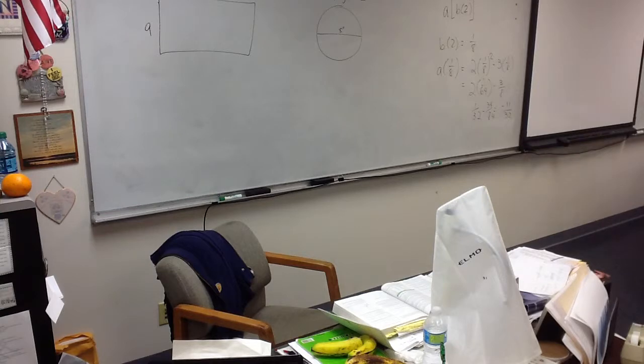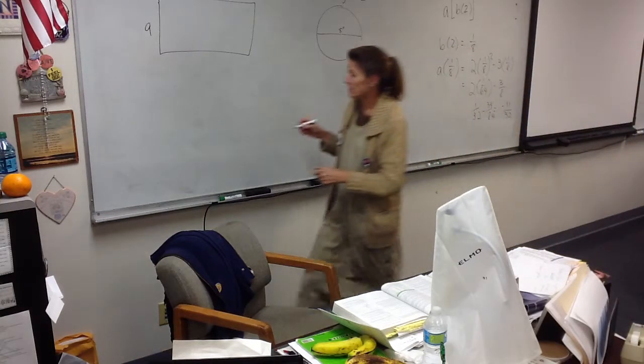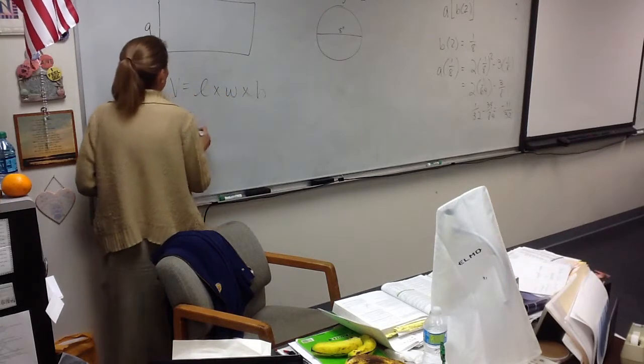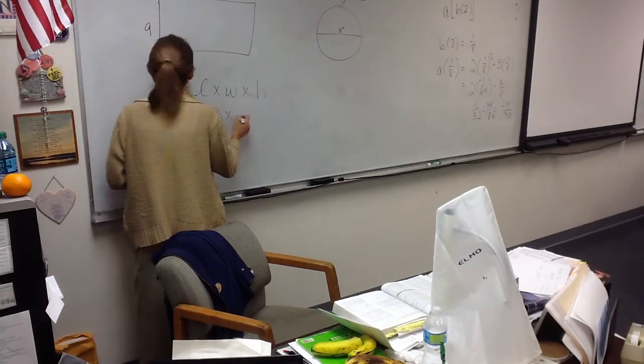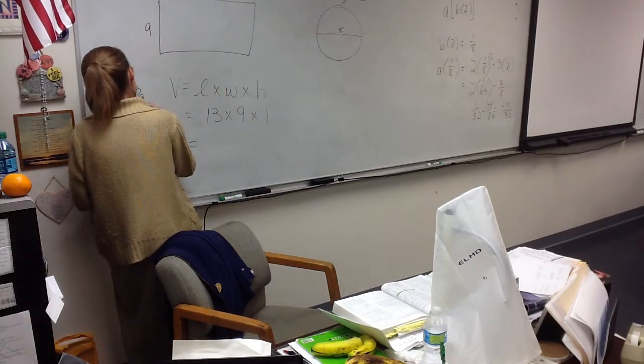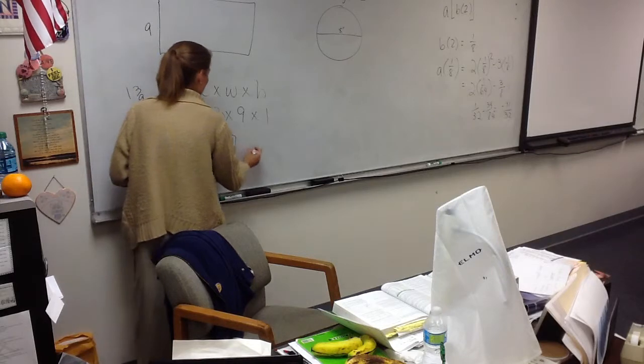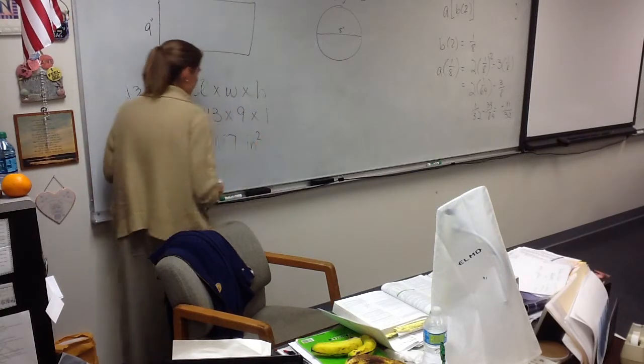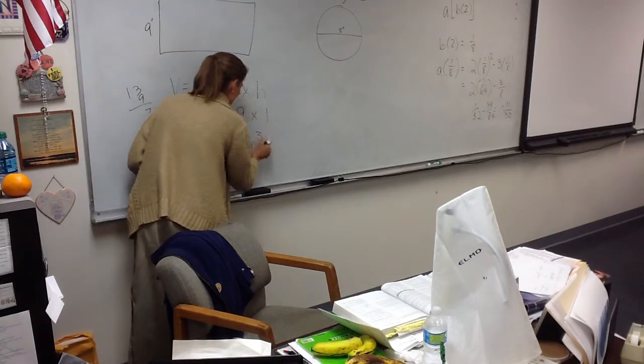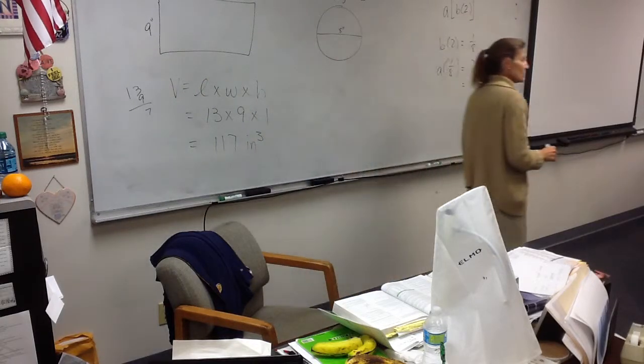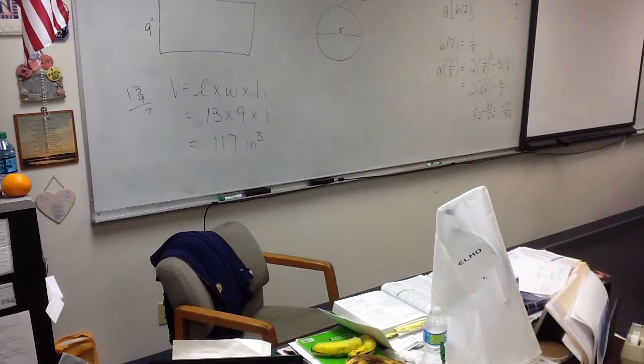Exactly. For the rectangular cake, the volume will be length times width times height, which is 13 times 9 times 1, which is what? What's 13 times 9? 117. And those were inches, right? So that's square inches. Or cubic inches, I'm sorry. Cubic inches. So I can get 117 cubic inches of cake if I buy the rectangle. All right.